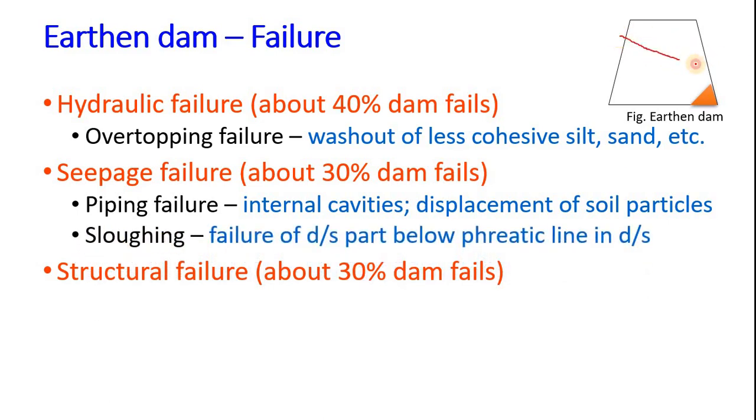Sloughing: this is the phreatic line, the uppermost saturated line. Below it all the soil is saturated. So if this is the phreatic line, then in the downstream there will be continuous wetting and drying, sloughing which causes failure of the downstream part. Failure of downstream part below the phreatic line is sloughing due to alternate wetting and drying.